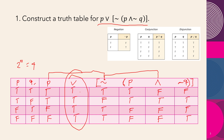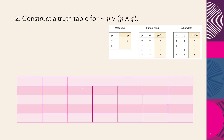This is how to construct a truth table using the alternative way. Now let's do example number two. There are two simple statements, so there are four rows: true, true, false, false for p; and true, false, true, false for q.